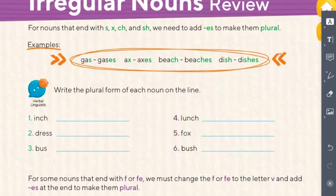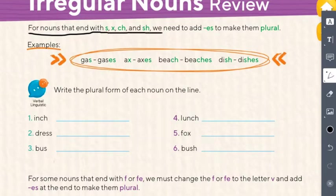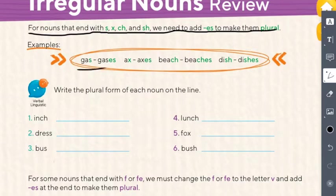Page 69 — Irregular Nouns Review. Let's read together: for nouns that end with S, X, CH, and SH, we need to add ES to make them plural. For example: gas/gases, tax/taxes, ditch/ditches, dish/dishes. Super simple.